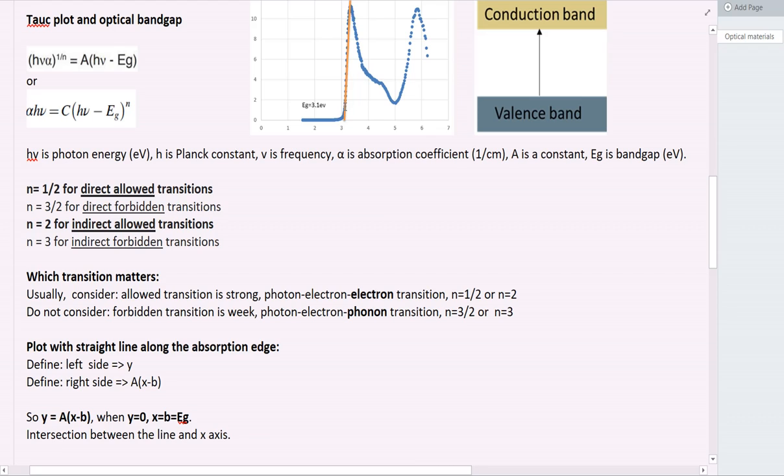And when the energy is strong enough, some electrons can be excited to the conduction band from the valence band. There's energy transfer from photon to electron. Then electron gets excited to the conduction band. So this leads to energy transfer, energy absorption.